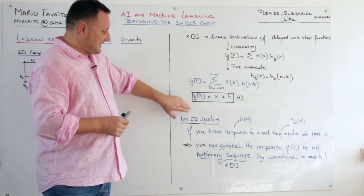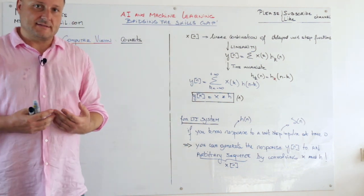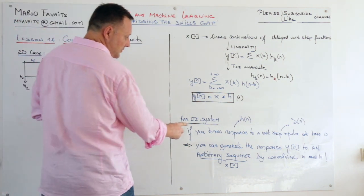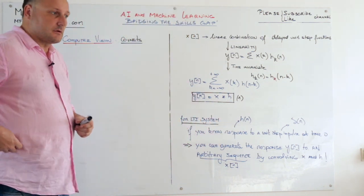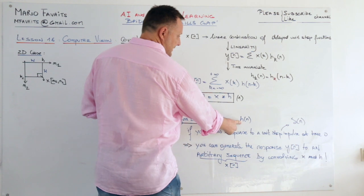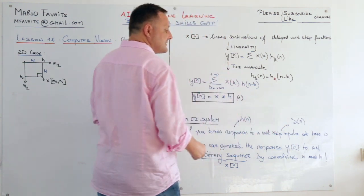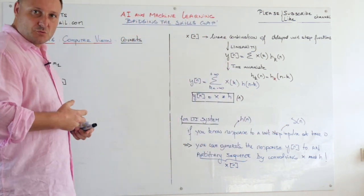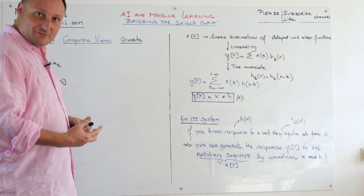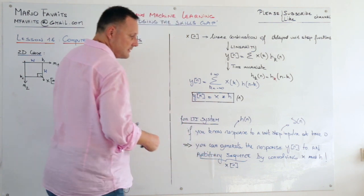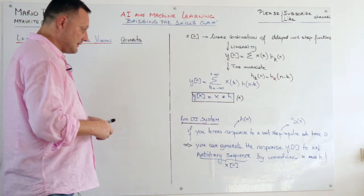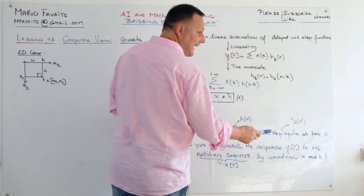All right, let me just summarize again. If you have an LTI system, if you know the response to a unit stepping pulse at time zero, this is the response and this is the unit stepping pulse, you can generate the response to an arbitrary sequence here x of n by convolving x and h.